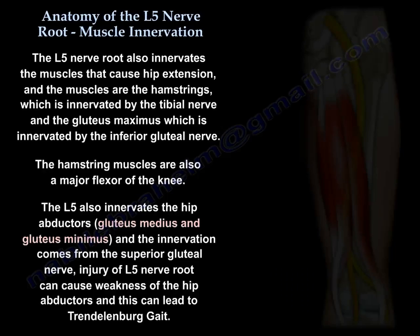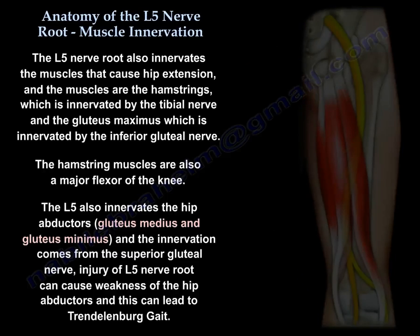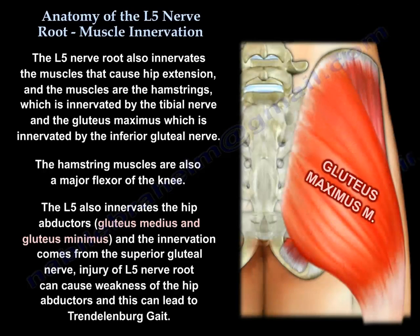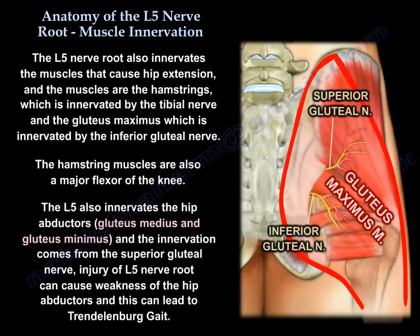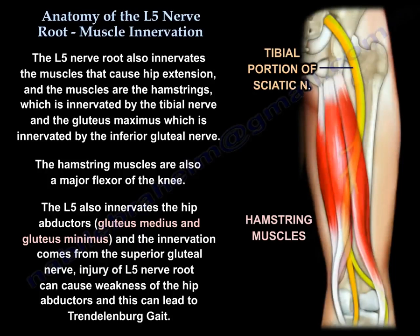The L5 nerve root also innervates the muscles that cause hip extension. These muscles are the hamstrings, which are innervated by the tibial nerve, and the gluteus maximus, which is innervated by the inferior gluteal nerve. The hamstring muscles are also a major flexor of the knee.